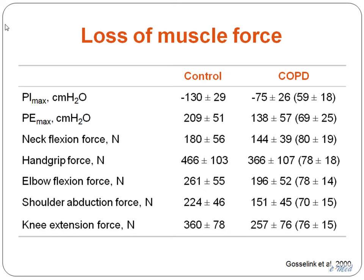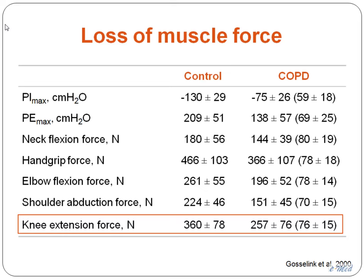The functional consequence of less muscle is that these patients are weak. The single greatest contributor to force-generating capacity is the amount of muscle you have. Rick Gosselink's lab looked at knee extension force using a hydraulic dynamometer: in healthy controls it's around 360 N, in COPD around 260 N — about 76% of normal, a reduction of around 25%, which is pretty similar to the depletion of muscle mass. Everything is down by about 20 to 30%. These patients will struggle to rise from a low-level chair without pushing up with their arms.